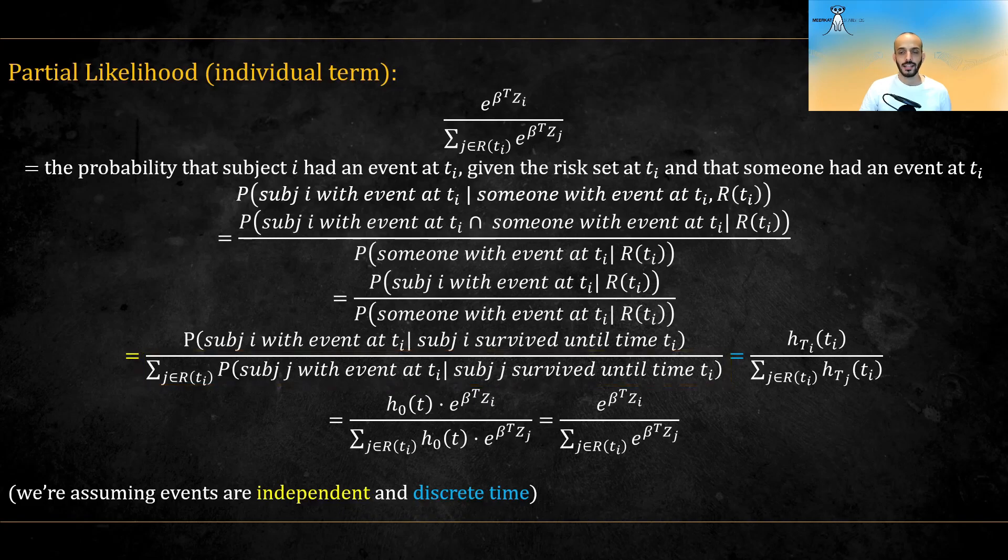Now, assuming discrete time, each term in the numerator and the denominator is actually the definition of the discrete hazard. Plugging in the Cox model for each hazard, we get this quantity, and noticing that h zero cancels out, we are left with the desired quantity.